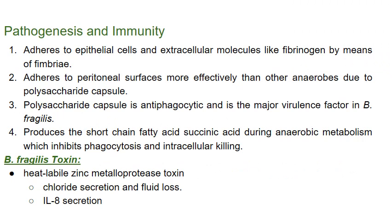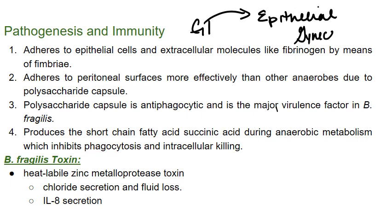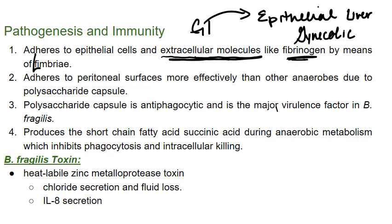So how does it cause disease? Most of the time when it's in your gastrointestinal tract, it's not really a problem. The problem is when it leaves. So we're talking about epithelial cells outside of the GI tract — for example in gynecologic infections or in the liver. It's going to adhere to epithelial cells, and it produces extracellular molecules which are fibrinogen-like. It's able to bind to molecules like fibrinogen by means of fimbriae — almost like little fingers that it uses to hold on to extracellular molecules on epithelial cells. It's able to adhere to peritoneal surfaces more effectively than any other anaerobe, and that's why it's such a big cause of infection.